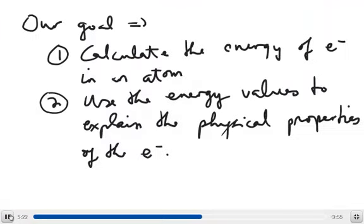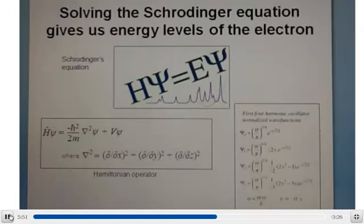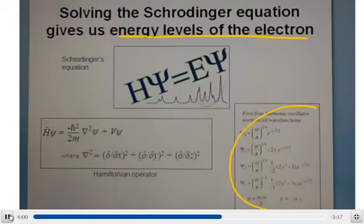Our main goal, really, is to calculate the energy of the electron in an atom. The reason this is useful is because the energy values we obtain from this calculation can be used to explain the physical properties of the electron, and knowing the physical properties of the electron will allow us to predict what the electron will do as far as reactivity in a certain chemical reaction. If we know the wave function for a particular atom, in order to calculate the energy levels of the electron, what we have to do is perform a mathematical operation. Each wave function represents the electron at a particular location, a certain distance away from the nucleus.